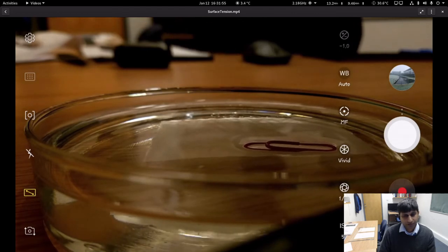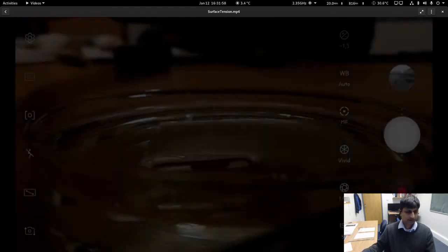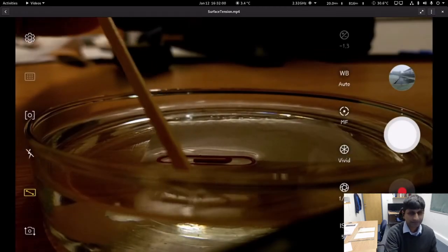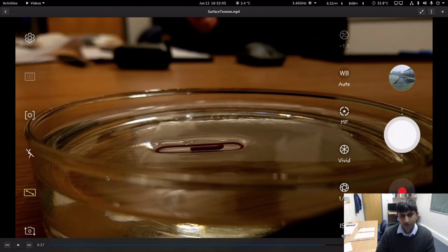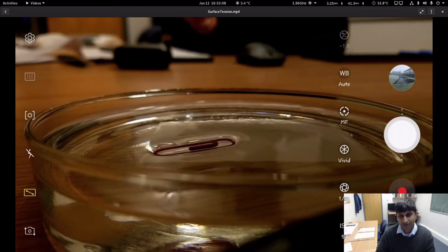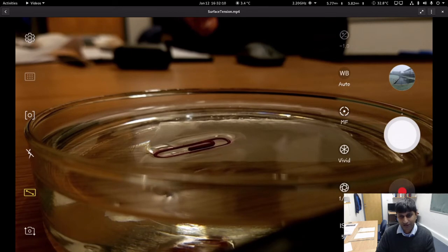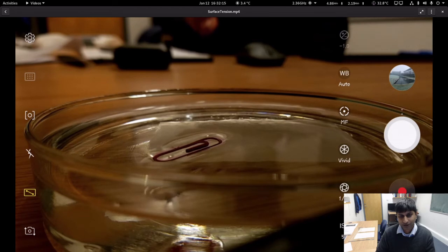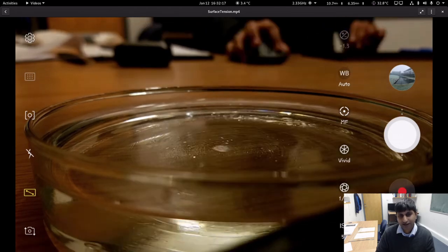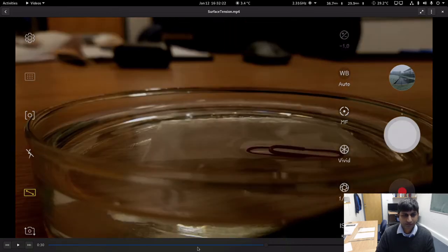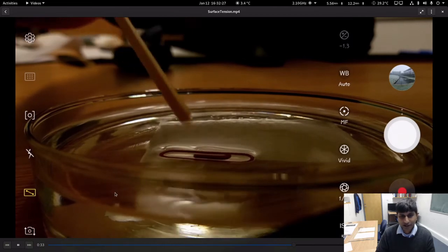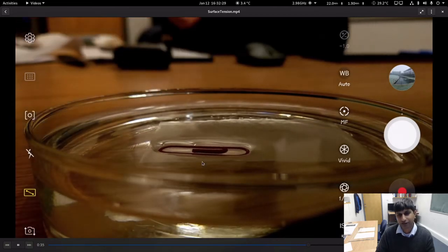Now this paper clip is made of steel, so it is heavier than water but it still floats. The reason why it floats is because the surface of water acts like a trampoline and exerts an extra vertical force on the paper clip. You can also see the depression in the water surface because of the weight of the paper clip.